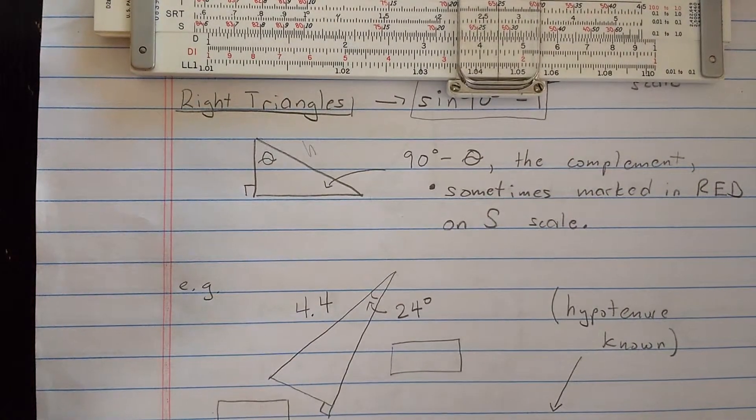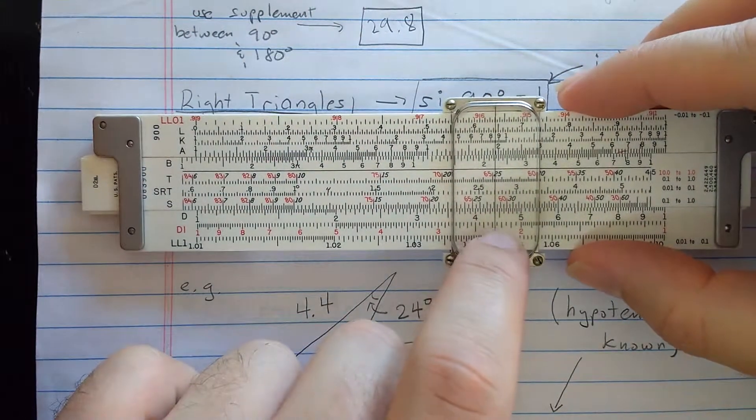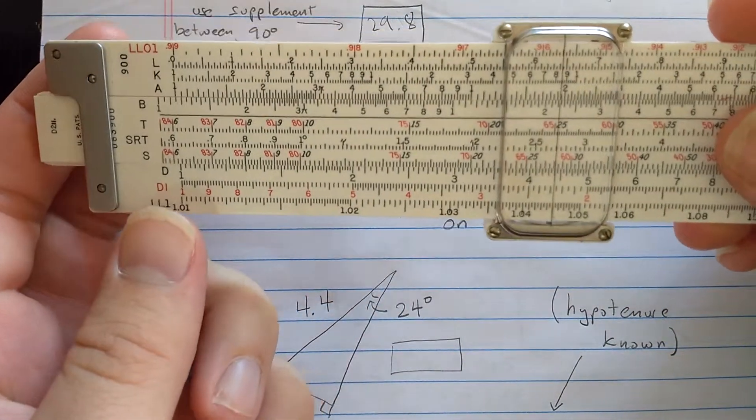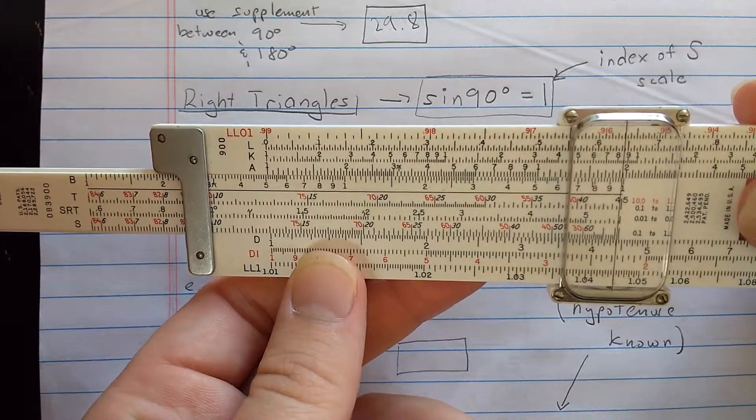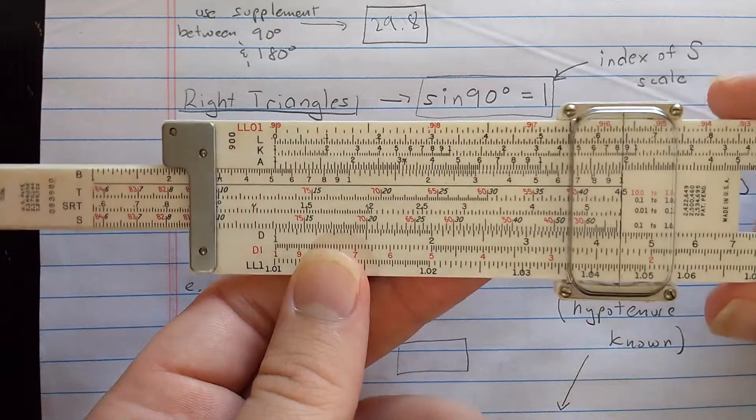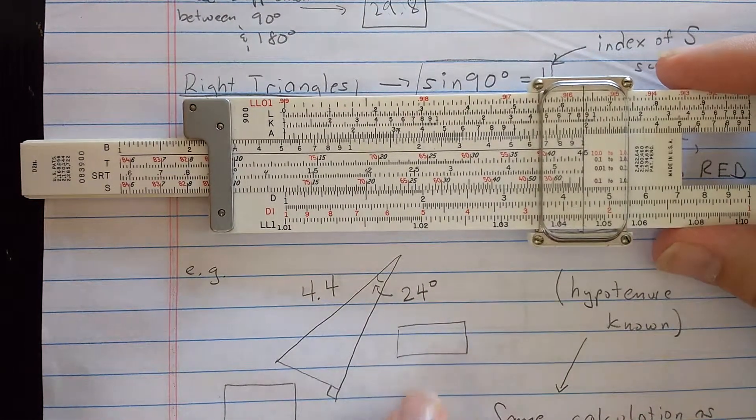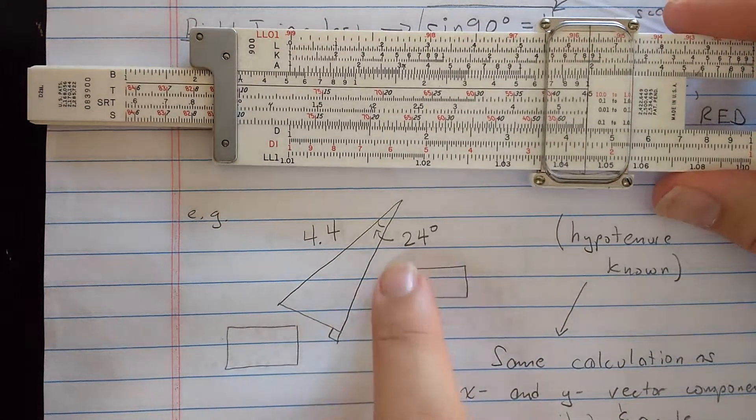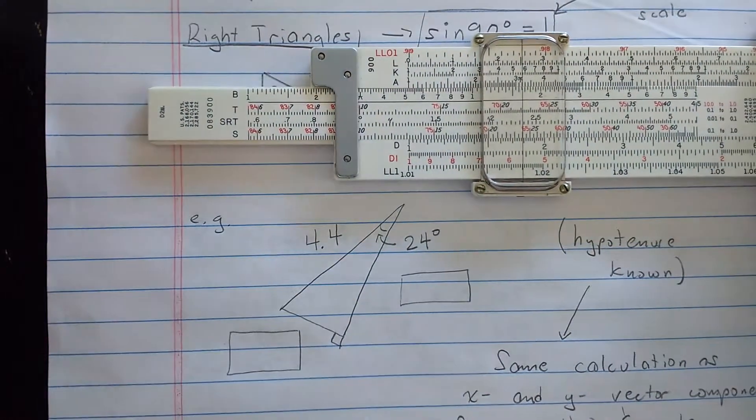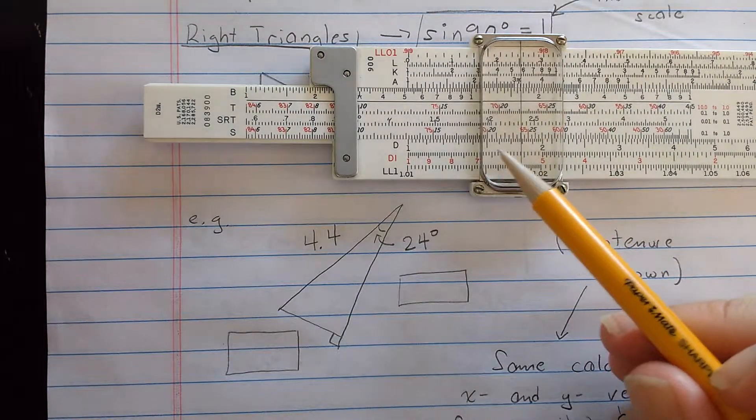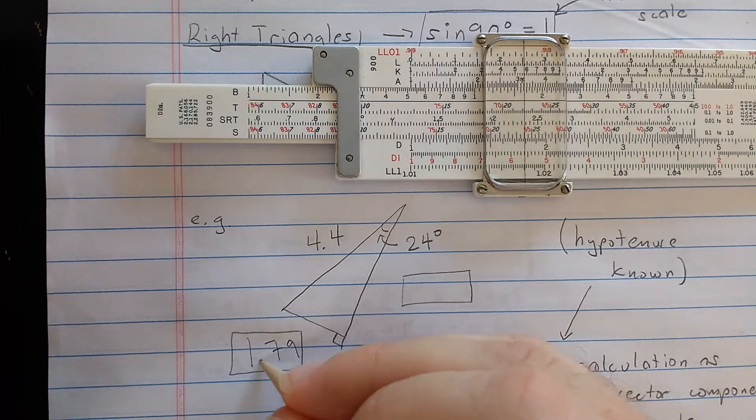So let's look at this first triangle. Here's the triangle where the hypotenuse is known. Hypotenuse is length 4.4. I've already found it on the D scale here, 4.4. So I found 4.4 on the D scale. What I want to do is align that with the index. Because the angle across from the side with length 4.4 is the 90 degree angle. Now the question is, how long is this side? Well, I should just find 24 degrees on the S. There's 24. And I read back down on the D scale that that's about 1.79.